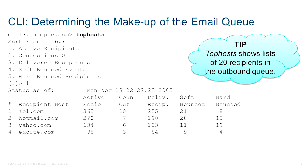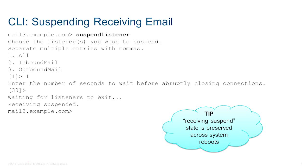With 'suspend listener,' maybe you need to do some work on your ESA or investigate a major issue. You'd like your public listener, which receives inbound email, to stop receiving email while you're doing investigation. You can use the 'suspend listener' command to stop inbound mail arriving from the internet — port 25 will no longer receive email, and emails currently in the work queue will continue to be processed and exit.